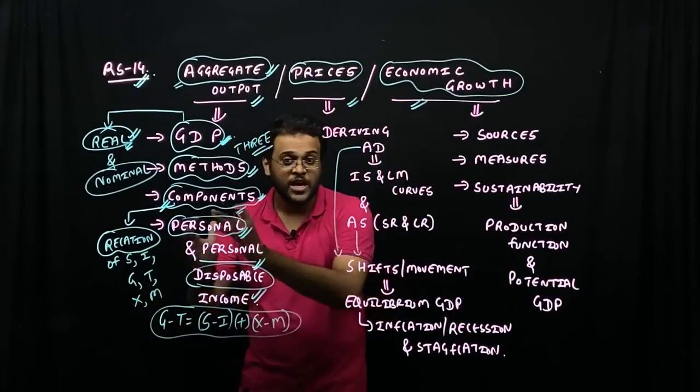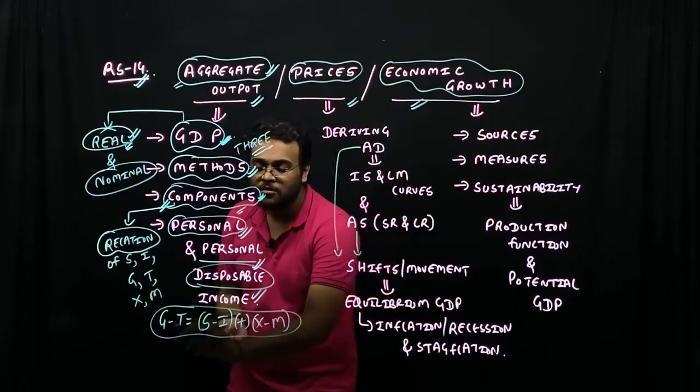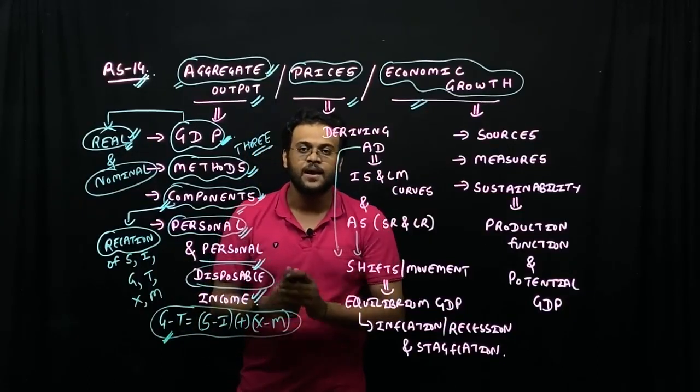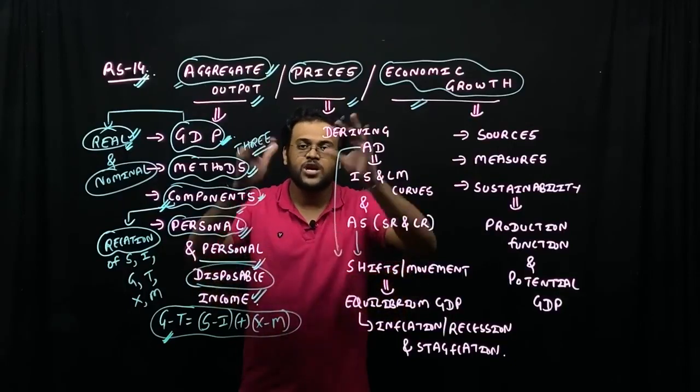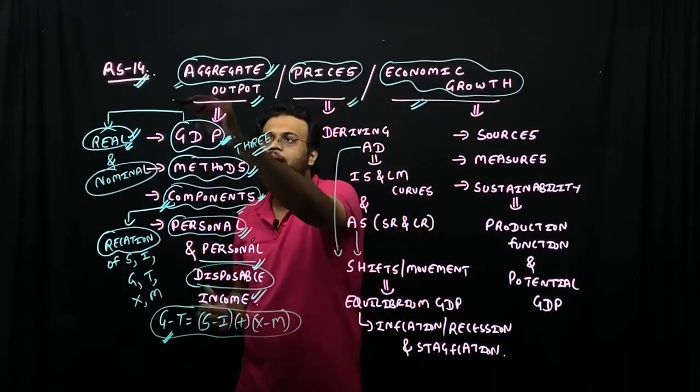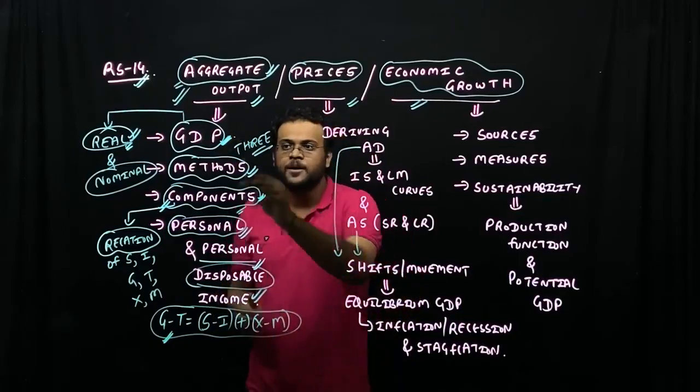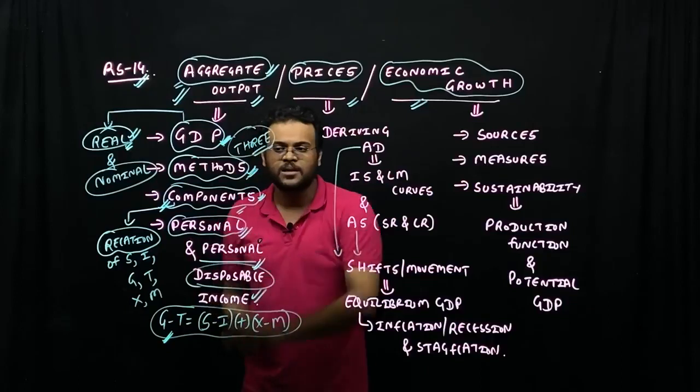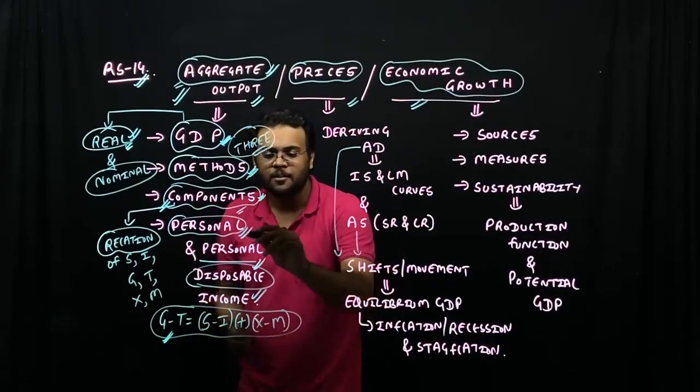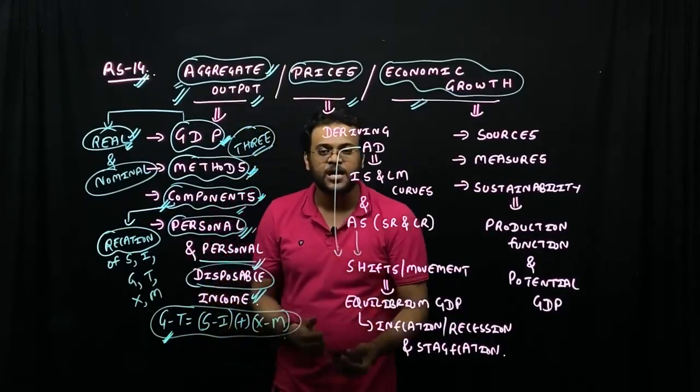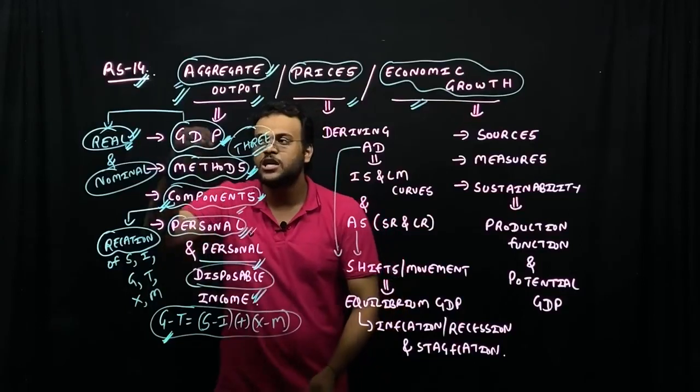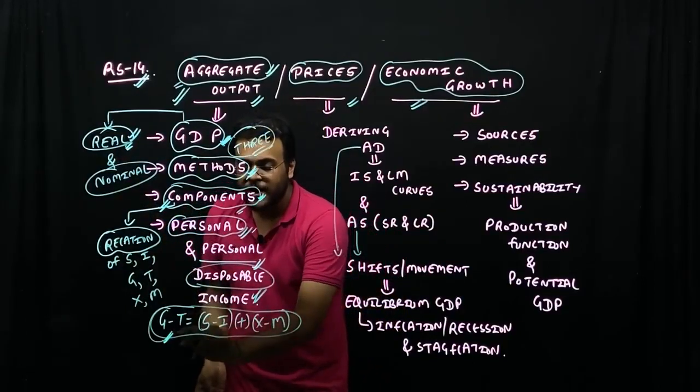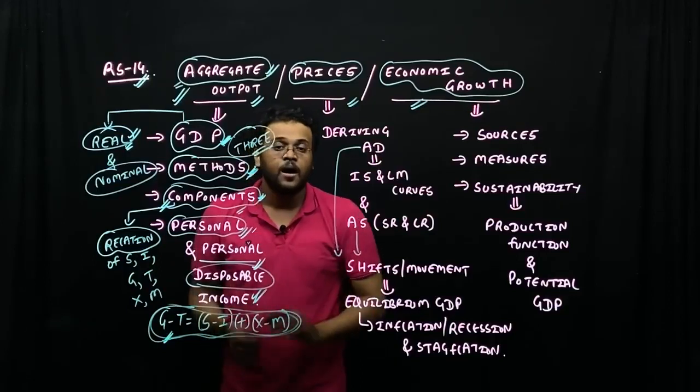GDP—what is the meaning, methods, components, personal income, personal disposable income, how the real and nominal differ, and components—how is the relationship and how is the meaning.